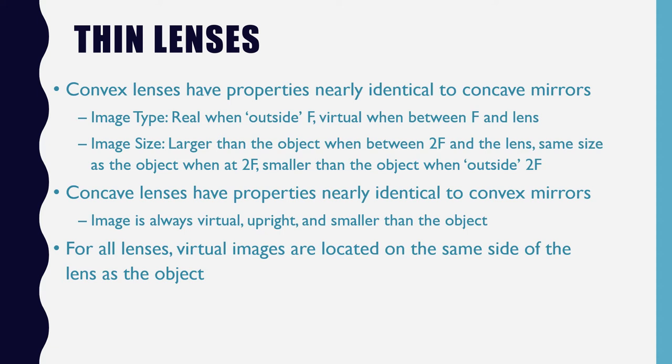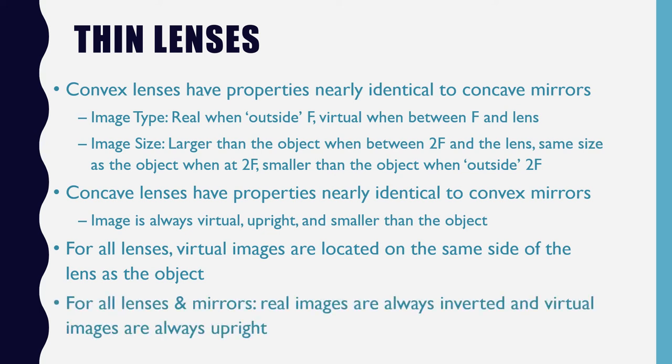For all lenses, virtual images are located on the same side of the lens as the object. And for all lenses and mirrors, real images are always inverted and virtual images are always upright.